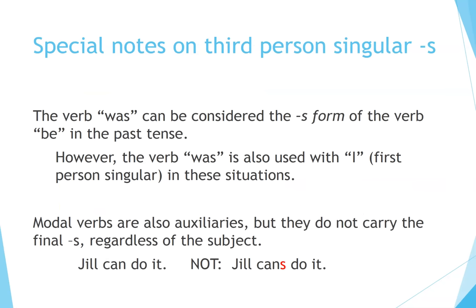Special notes on third person singular S: The verb 'was' can be considered the S form of the verb 'be' in the past tense. However, 'was' is also used with I (first person singular). Modal verbs are also auxiliaries, but they do not carry the final S regardless of the subject. For example: Jill can do it — not 'Jill cans do it.'